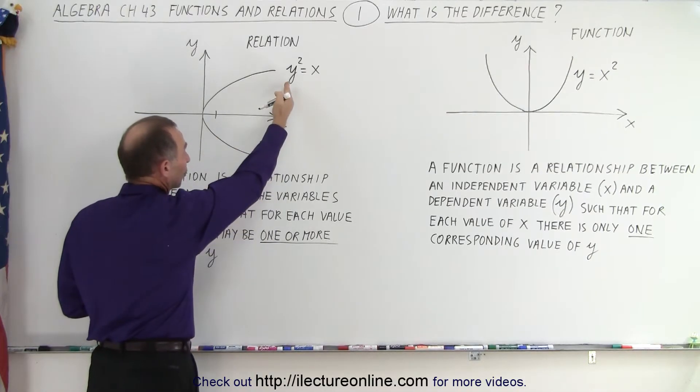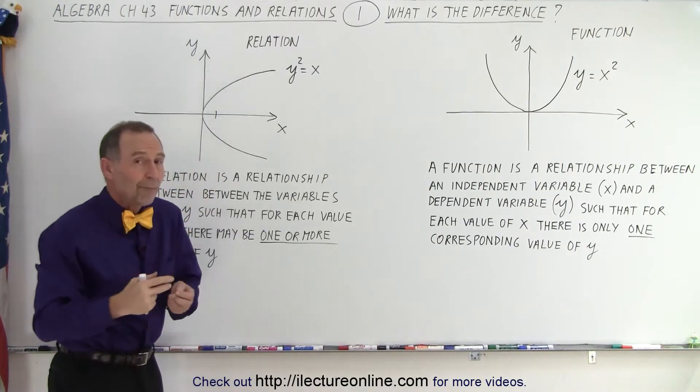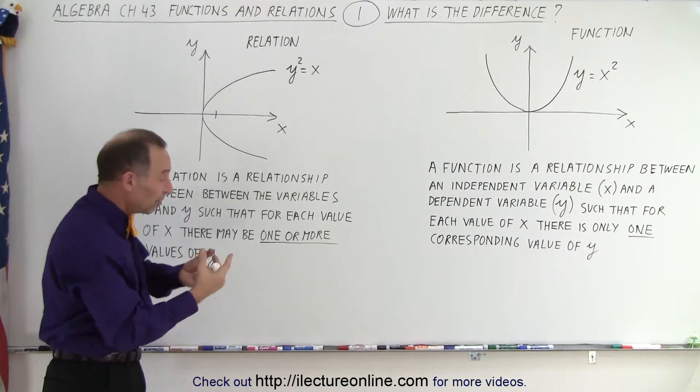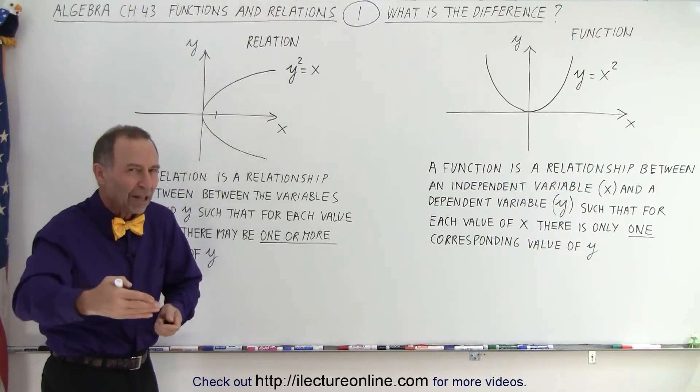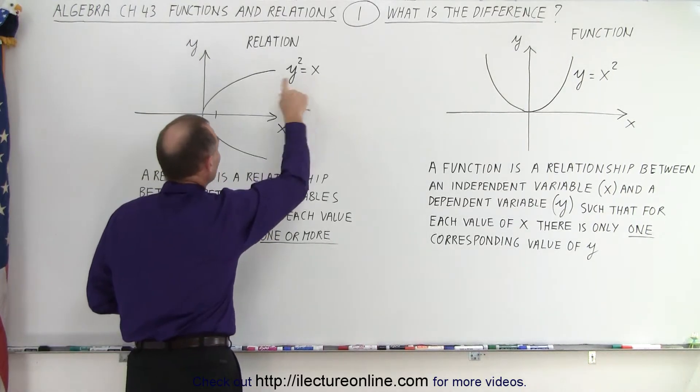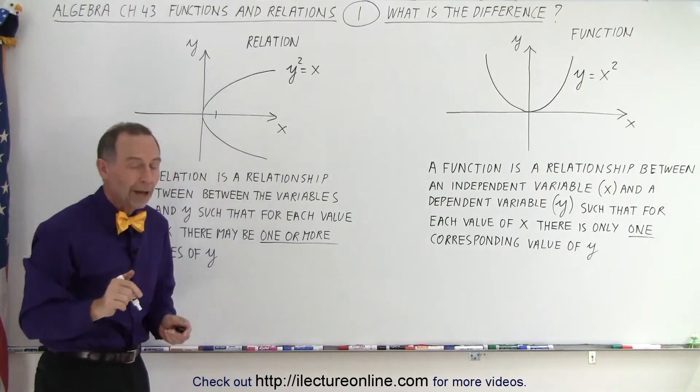Why is that? Because we're squaring y, so it doesn't matter if y is a negative number or positive number. When you're squared, you get the same value, and so therefore, for one value of x, you could have more than one value for y.